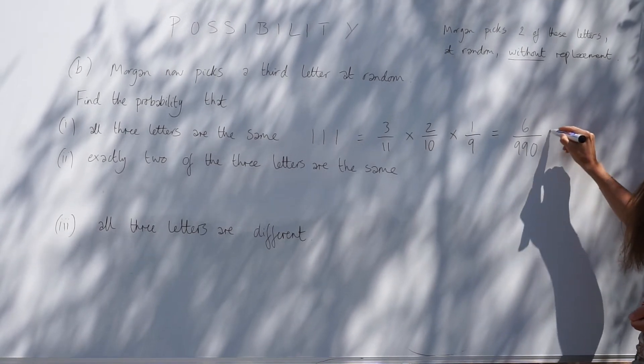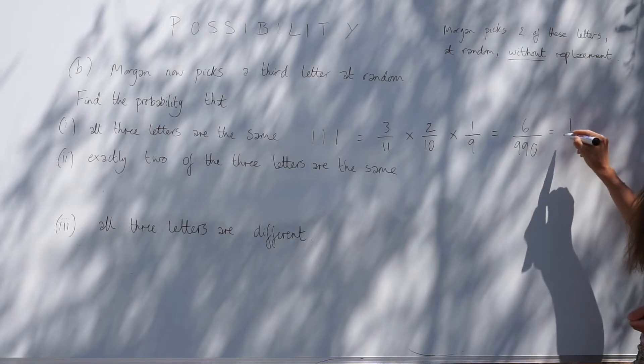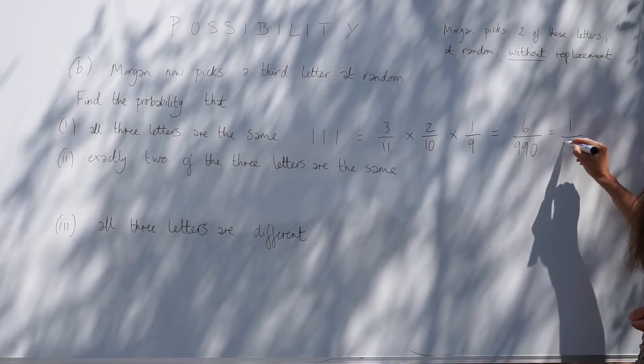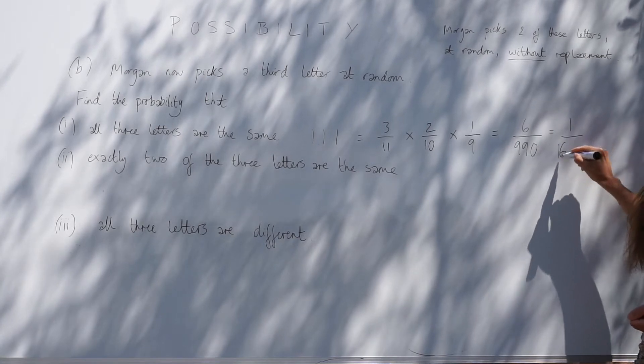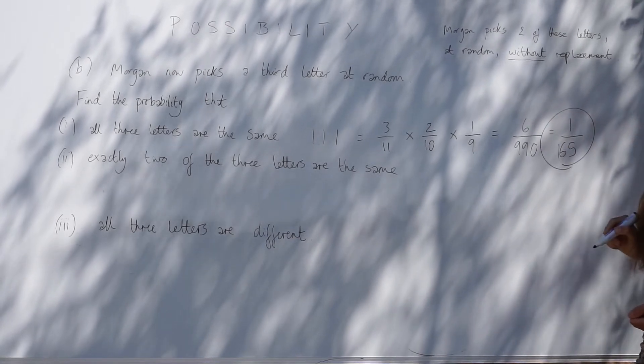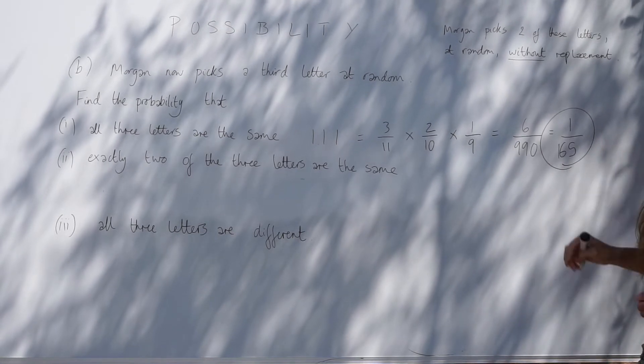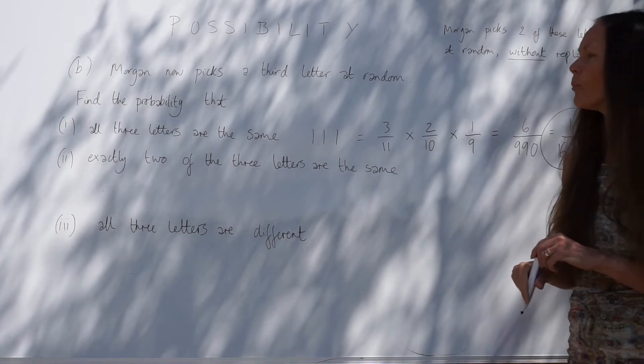Multiplying the denominators gives 990, and this fraction simplified becomes 1/165.